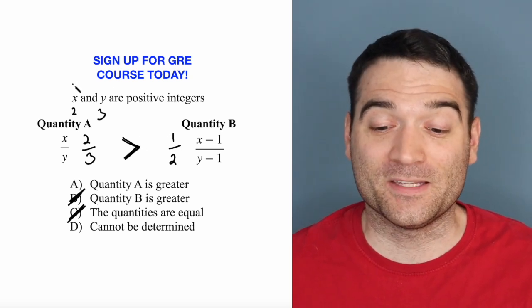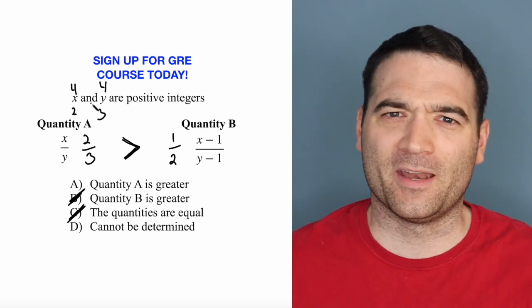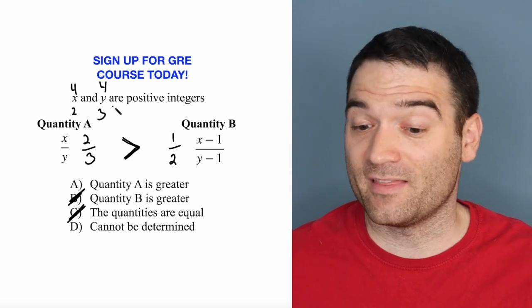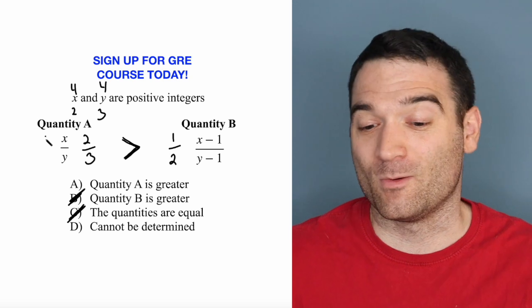Well, what if I made both of these numbers 4? You might say, oh, well, hold on a minute. They're allowed to be the same number. Why not? There's nothing saying that they are distinct numbers. X could equal Y. So let's just say that X and Y are equal.